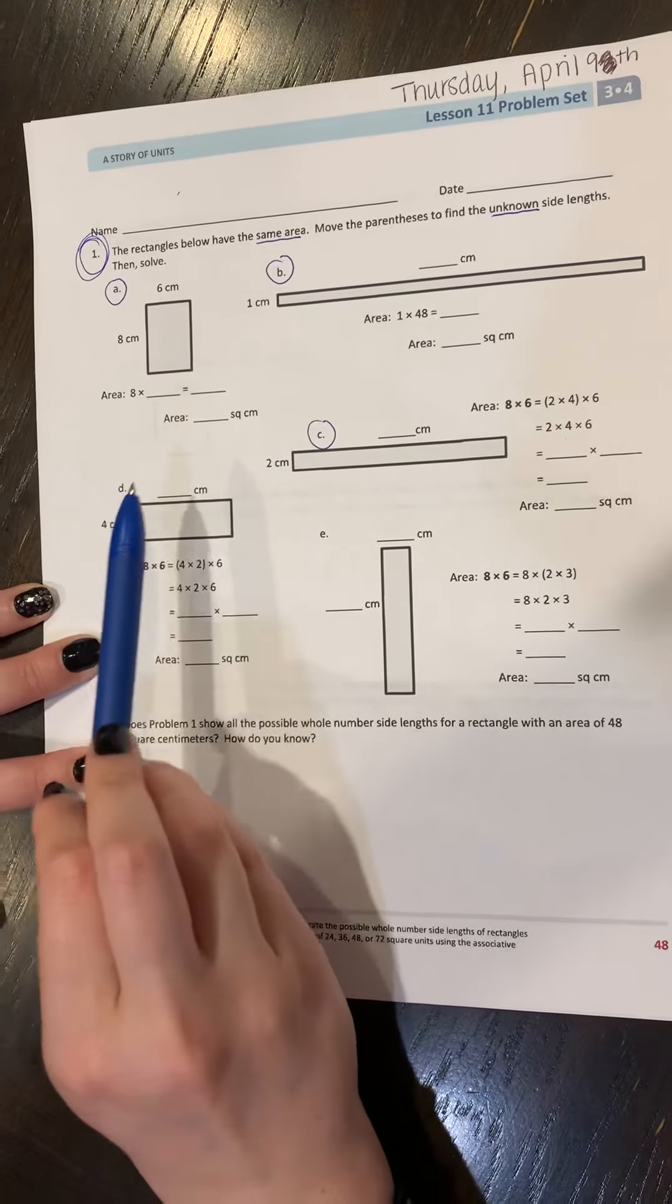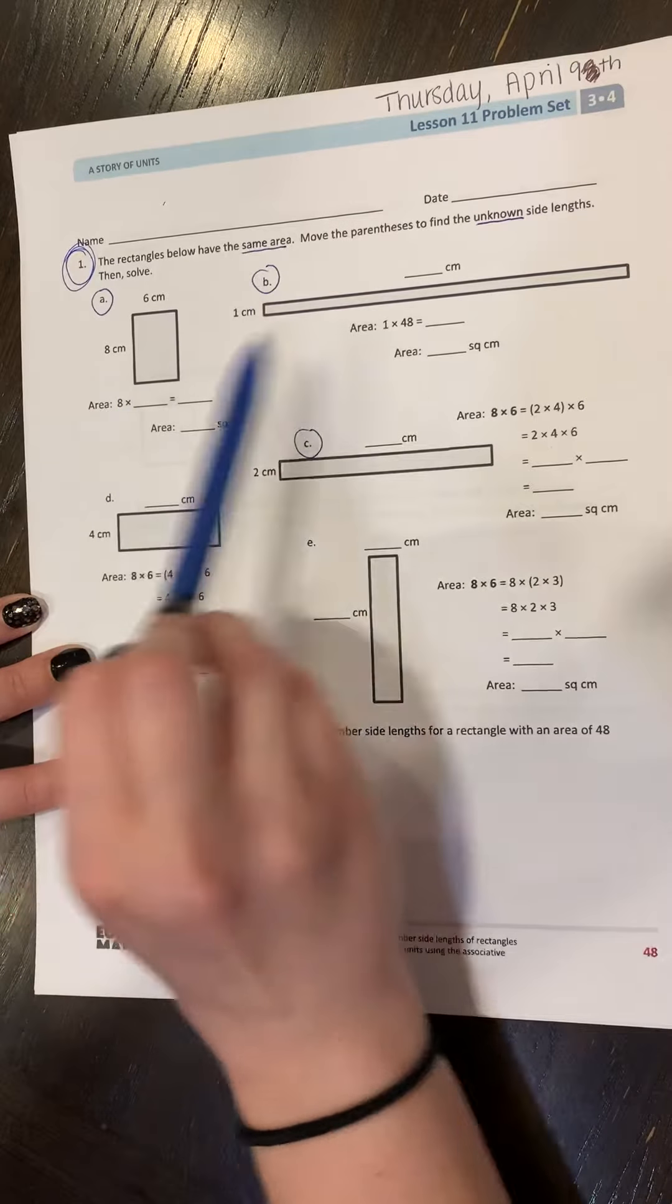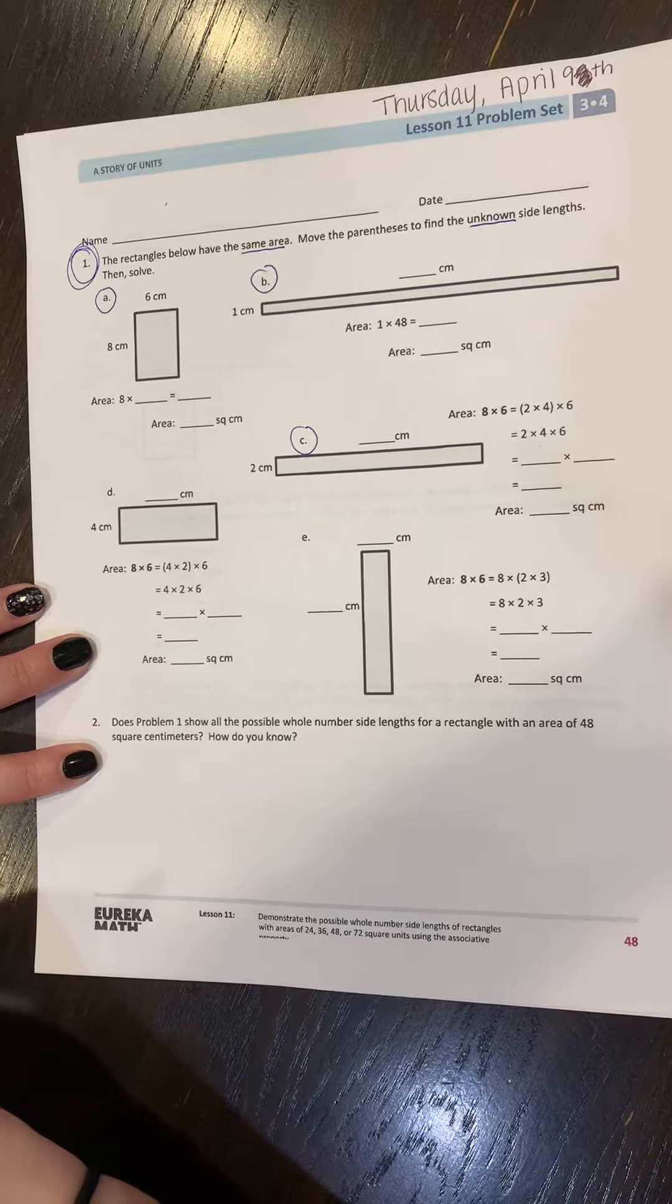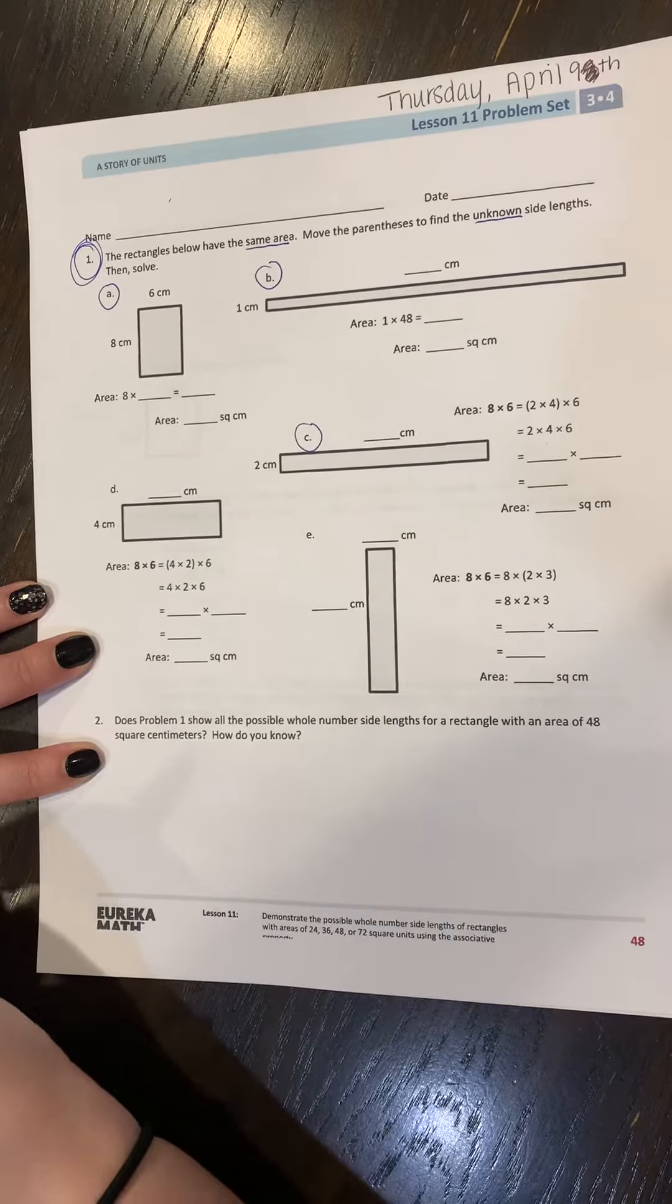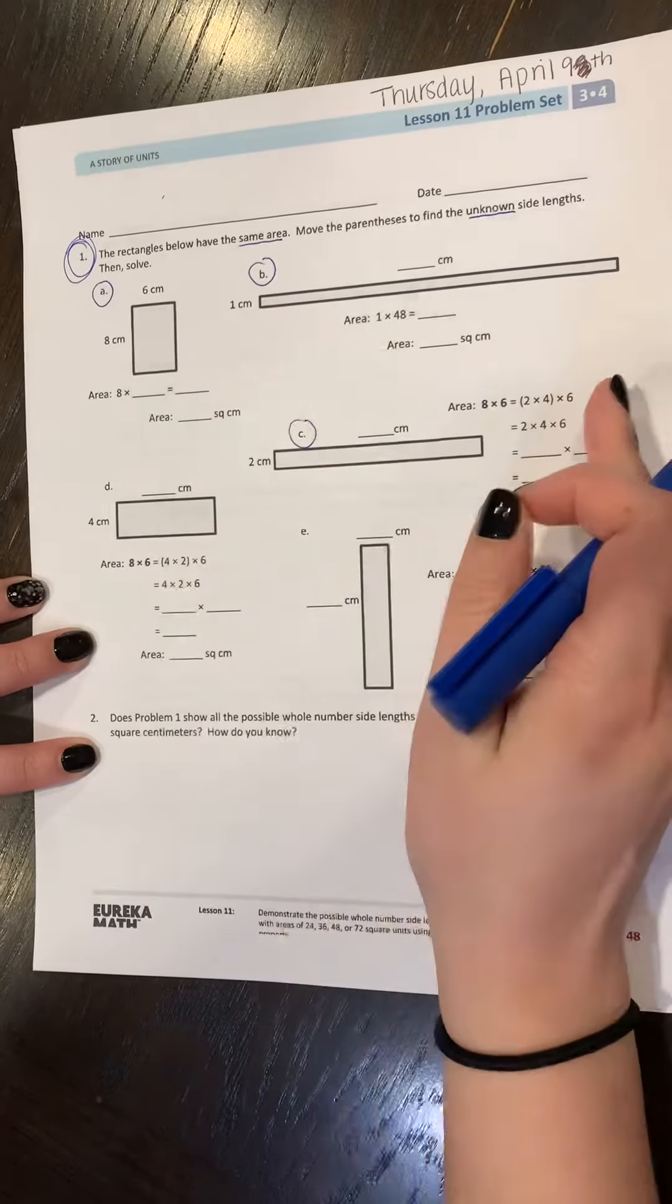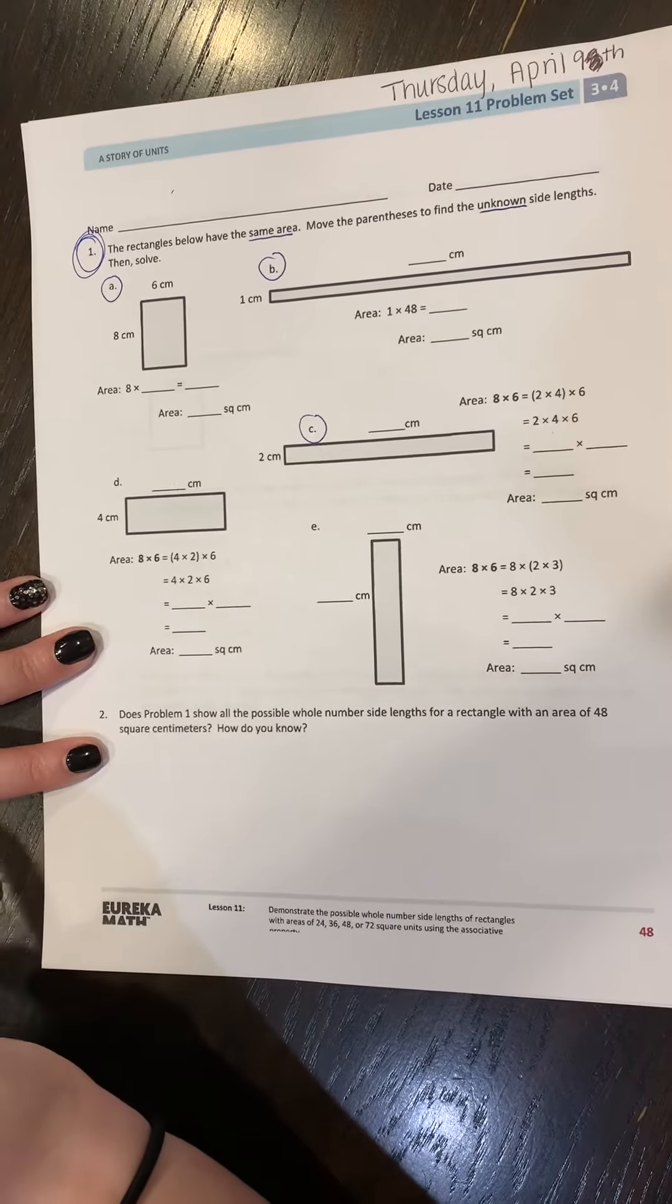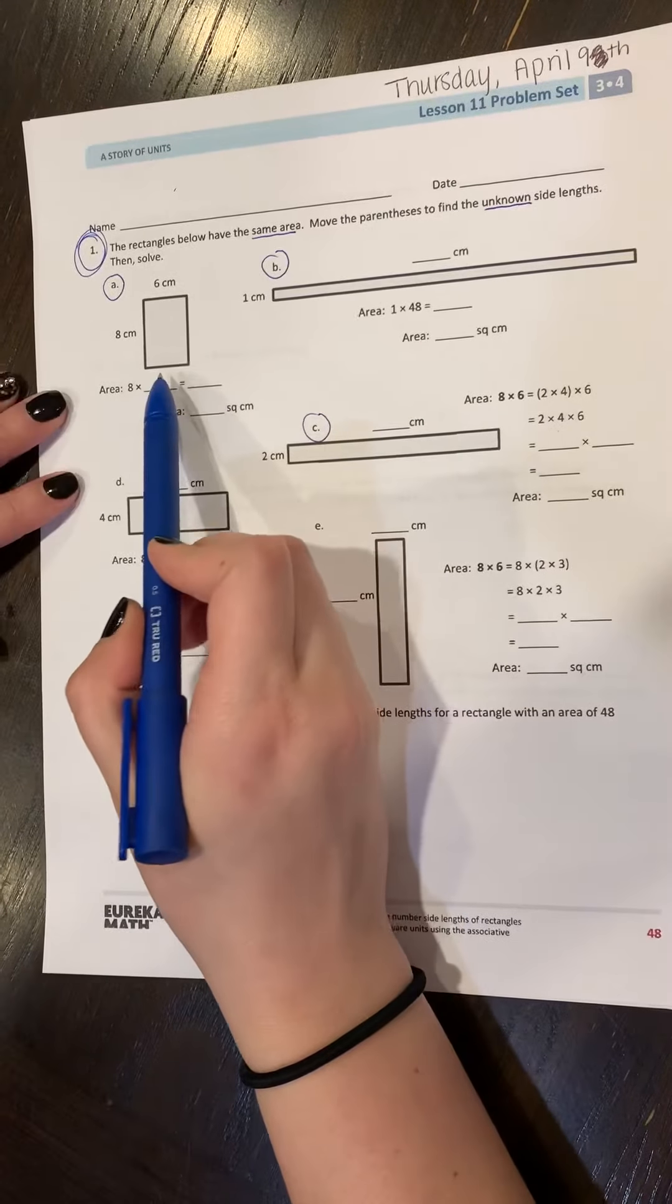So what this means is we already know that all of these rectangles are going to have the exact same area. What we have to do is think about how we would need to move the parentheses over so we can solve for these. So if we take a look at this first rectangle for A,